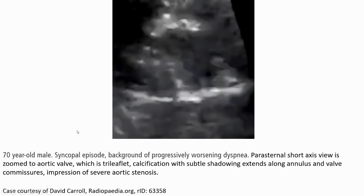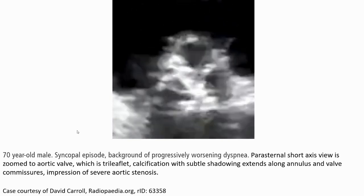In the same case on echocardiography at the parasternal short axis view, zoomed to the aortic valve, there is three-leaflet calcification with subtle shadowing extending along the annulus and valve commissures — an impression of severe aortic stenosis.